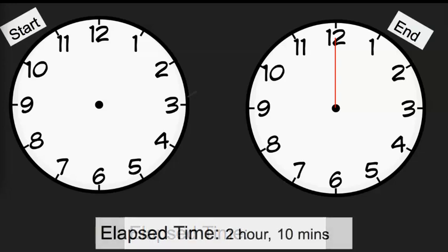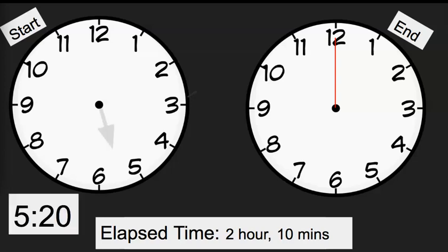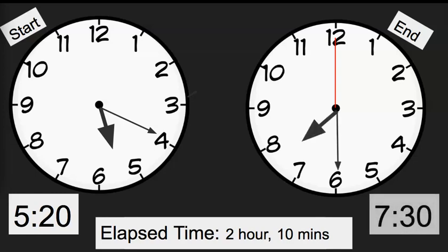We're going to do one more. Mrs. Smith was cleaning the windows. She was cleaning for two hours and ten minutes — so get your clocks ready with a start time and end time. She started at 5:20. What time did she end? Pause the video. The answer would be 7:30 — because we did two hours, so 7:20, and then ten more minutes gives 7:30.